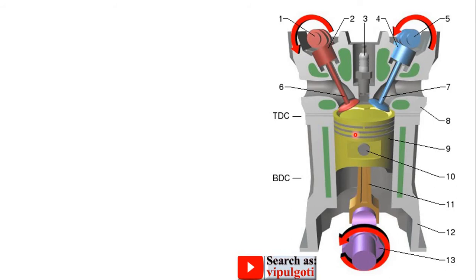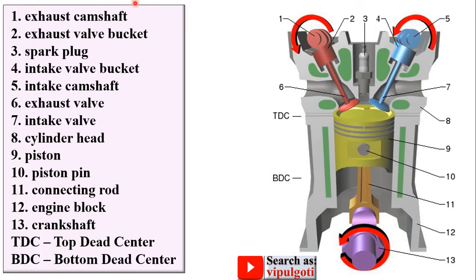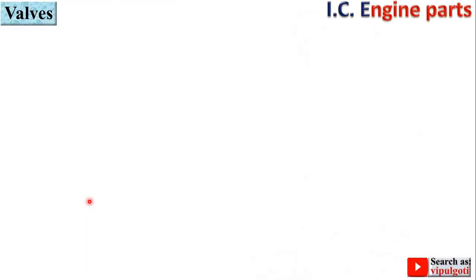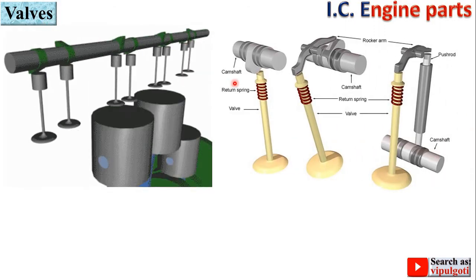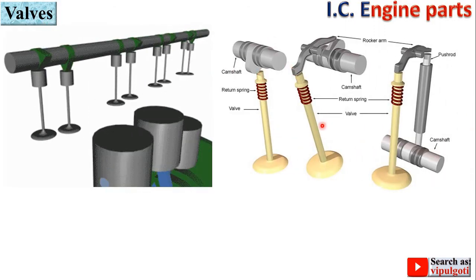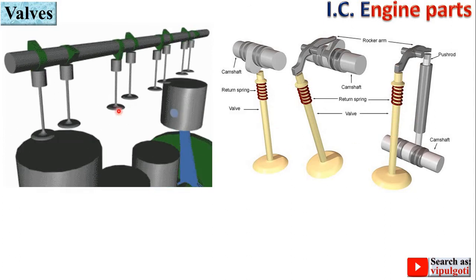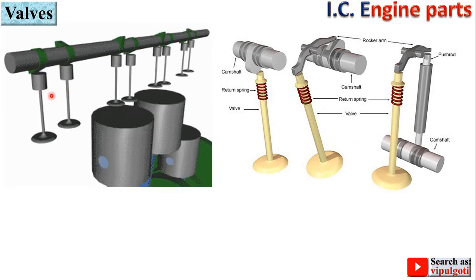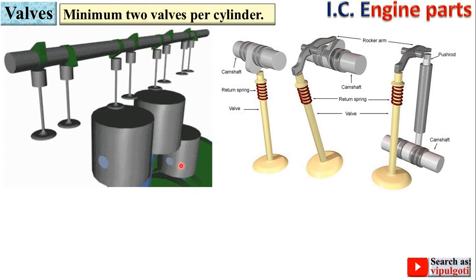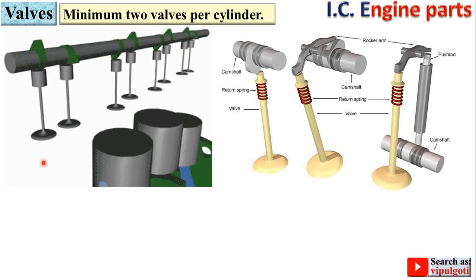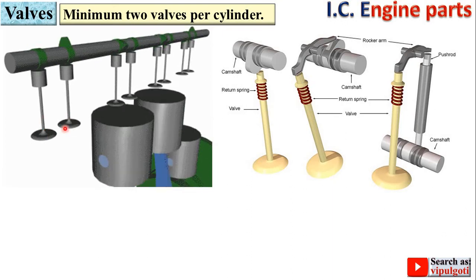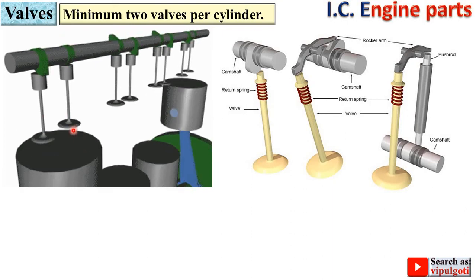This is the cut section of the IC engine and these are the different parts that we are going to discuss one by one. Let's start from the first part of the IC engine: valves. Here you can see these are the valves. Minimum two valves per cylinder — here you can see two valves per cylinder.